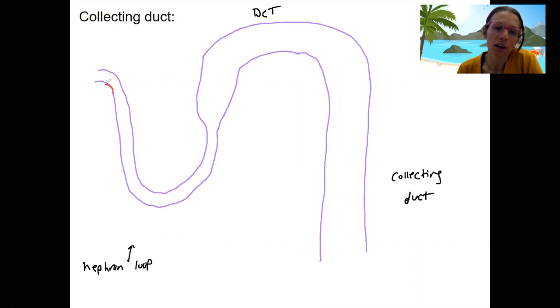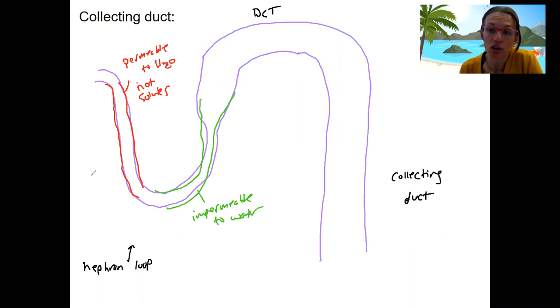And remember in our nephron loop, we've got the descending loop, which is permeable to water, not solutes. Permeable to water, impermeable to solutes. Our ascending nephron loop is here. This is impermeable to water. So water is going to be reabsorbed in this descending portion. Sodium and chloride are reabsorbed in this ascending portion.